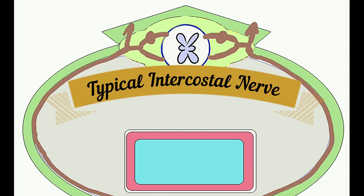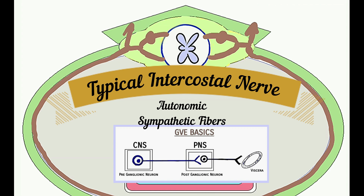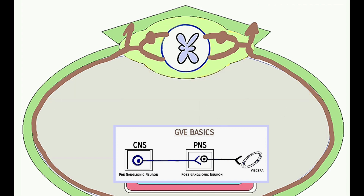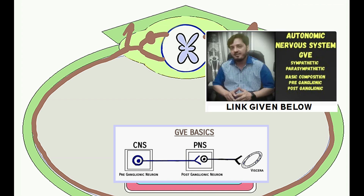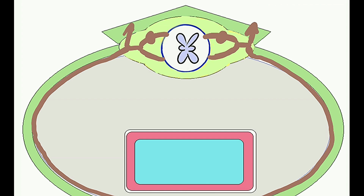Now I will discuss an important fiber present in these nerves: the sympathetic part of the autonomic nervous system — the general visceral efferent component. This component consists of two neurons: a pre-ganglionic neuron and a post-ganglionic neuron. The detail of these neurons is in my video lecture about the autonomic nervous system — link is in the description. Here I will only talk about this specific fiber.